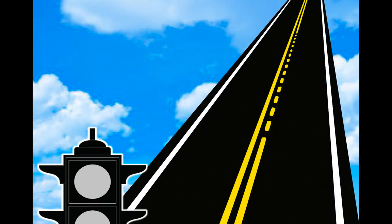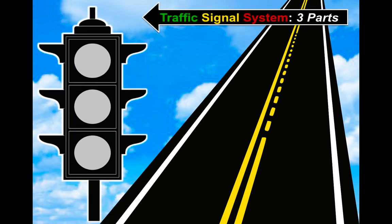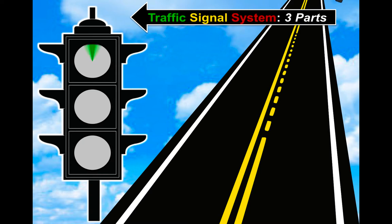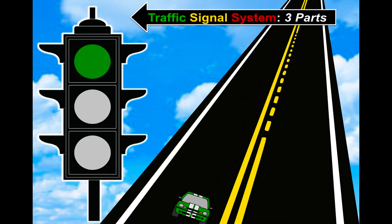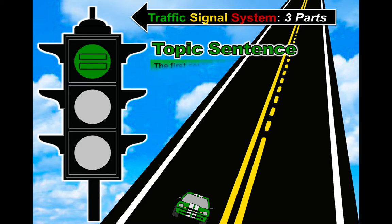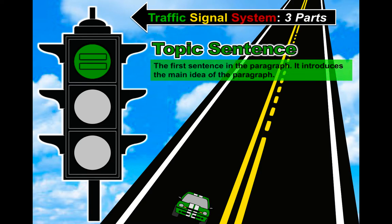The Traffic Signal System is made up of three main parts, just like any other paragraph. The color green stands for the topic sentence. The topic sentence is the first sentence in the paragraph. It introduces the main idea of what the paragraph will be about.